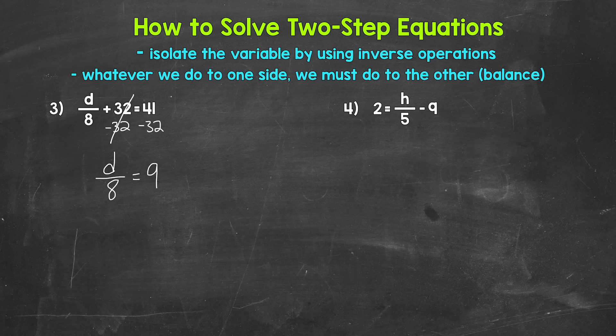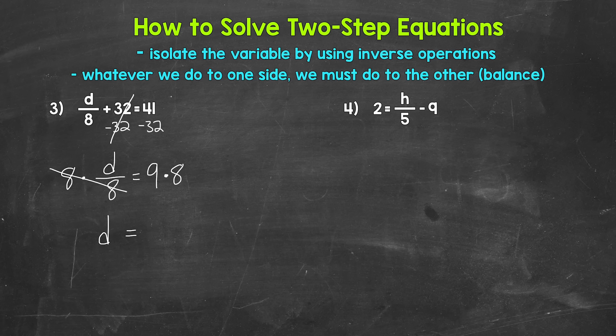So we have d divided by 8 equals 9. d is being divided by 8 — what's the inverse operation of division? Well, multiplication. So let's multiply the left side by 8 — whatever we do to one side, we must do to the other — so multiply the right side by 8 as well. On the left side, we are dividing by 8 and multiplying by 8, so these 8s cancel each other out. d is now isolated. d equals 9 times 8, which gives us 72. So d equals 72, that's our solution.